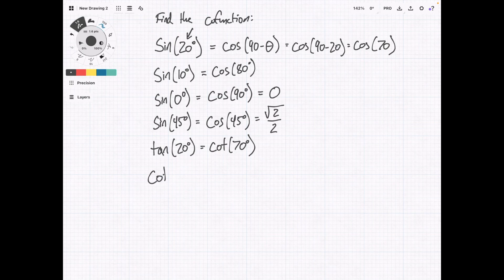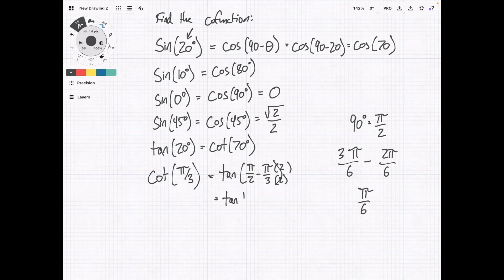If we have cotangent of pi over 3, then we'll need to figure out what this actually is. As I said before, 90 degrees equals pi over 2 radians. So this is going to equal the tangent, which is the co-function, of pi over 2 minus pi over 3. So we're going to get these in like terms. We're going to multiply both the top and bottom of the first thing by 3. So we're going to have 3 pi over 6 minus, and we're going to multiply this side by 2 over 2, minus 2 pi over 6. So that's going to come out to be pi over 6. So our answer is actually the tangent of pi over 6.